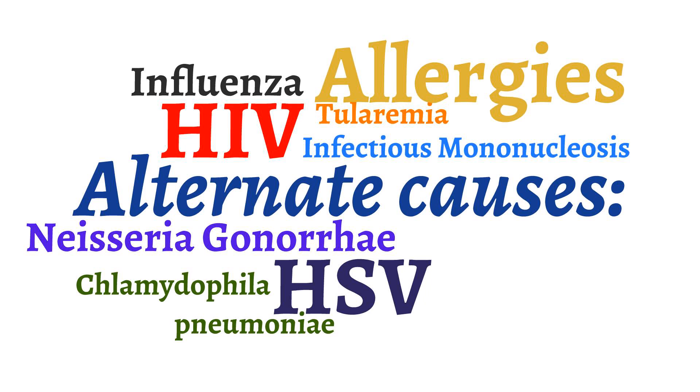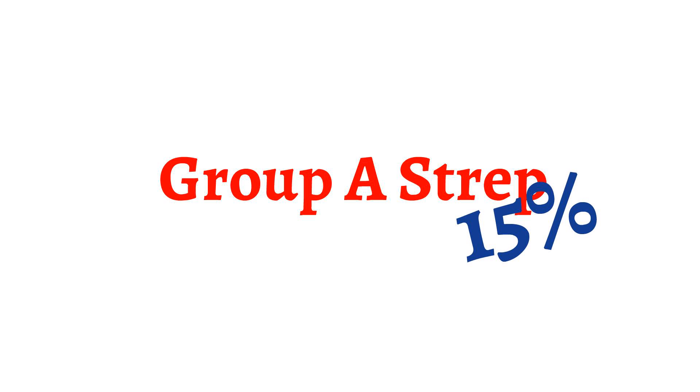Group A streptococcus is one of the most important infectious causes of pharyngitis to identify, because if not treated, group A strep can lead to acute rheumatic fever. Up to 15% of patients who present with pharyngitis come back positive for group A strep on throat cultures.